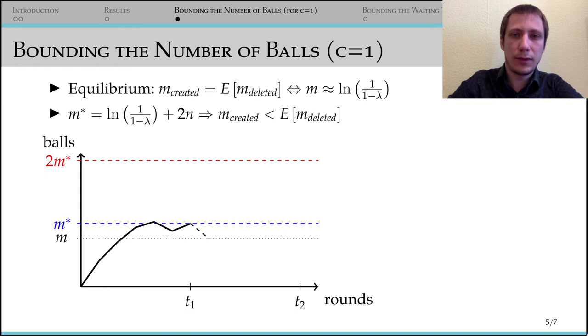If at some time t2 we have at least 2m-star balls, then there must be a time t1 where we were at m-star balls for the last time. We show that an increase of m-star balls is unlikely, regardless of the number of rounds in between.